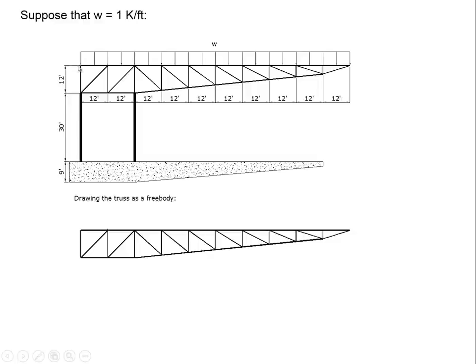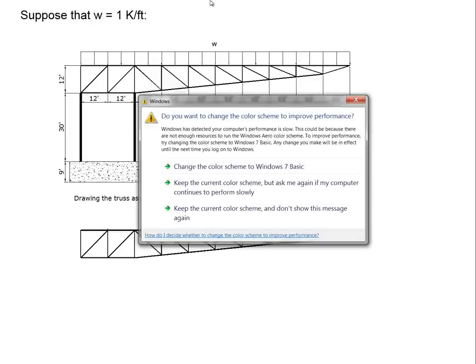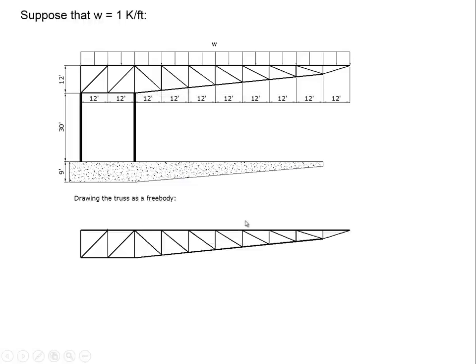And we have some sort of uniformly distributed roof load over this. And for the moment, to keep our numbers simple, we've made w equal to one kip per foot. So when we multiply one kip per foot times 120 feet, we have a total of 120 kips, which would be centered over this point.